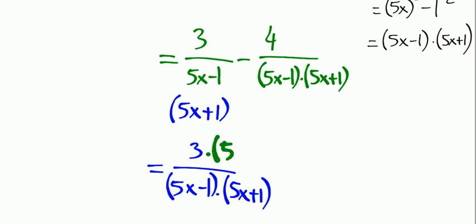Notice we will not forget to multiply the numerator too, so I'm going to write here 5x minus 1. The first fraction now has become 3 times 5x minus 1 over 5x minus 1 times 5x plus 1.